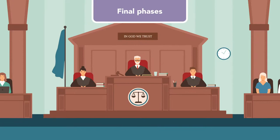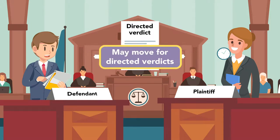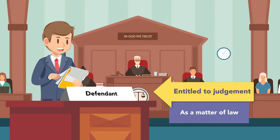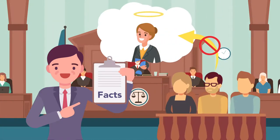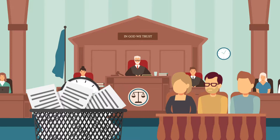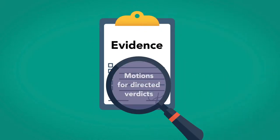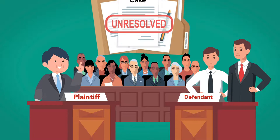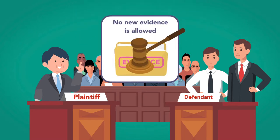Once each party has closed its case, the trial moves to its final phases. After both sides have presented their cases, either or both sides may move for directed verdicts. These can be granted if the court believes that the movant is entitled to judgment as a matter of law because, even taking all the facts in the light most favorable to the other side, no reasonable jury could find for that side. Following the evidence and motions for directed verdicts, if the case is not resolved, each party can give a final argument to the jury or judge, explaining how and why it met its burden of proof and/or why the other side did not. No new evidence is allowed in the final argument.